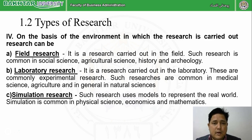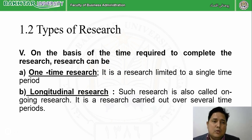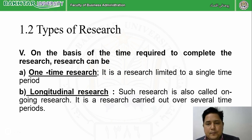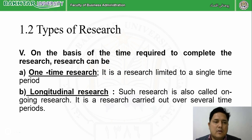On the basis of time, we have two types. One-time research means you started the research, conducted it, and finished it in a single stretch — whether the duration is three months, six months, eight months, ten months, or twelve months. You did not have a break during your research; you started and completed it continuously. That is called one-time research.